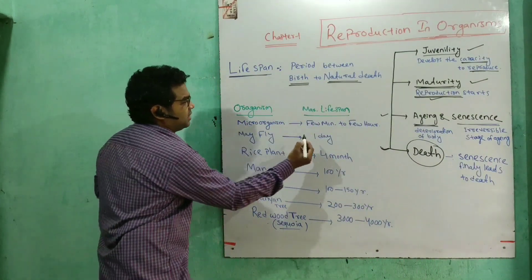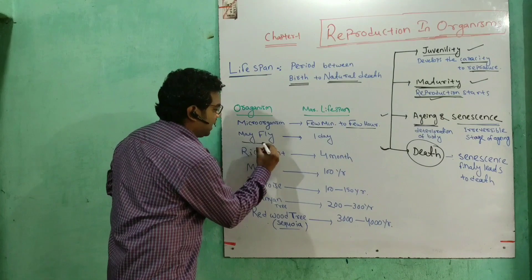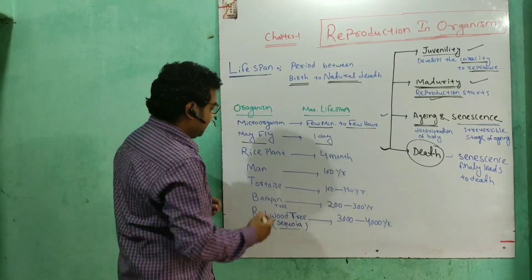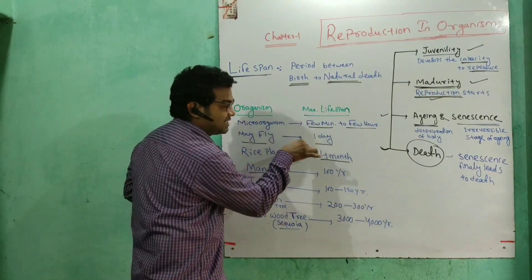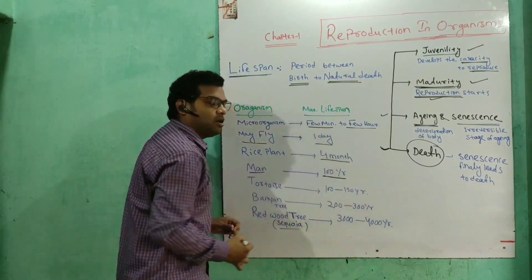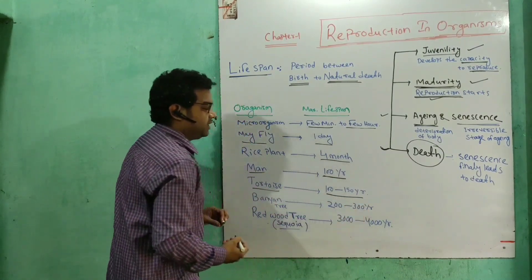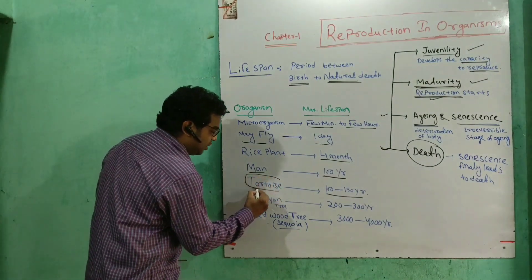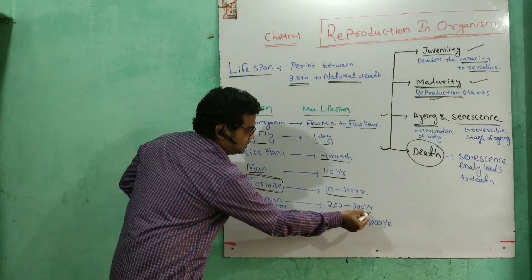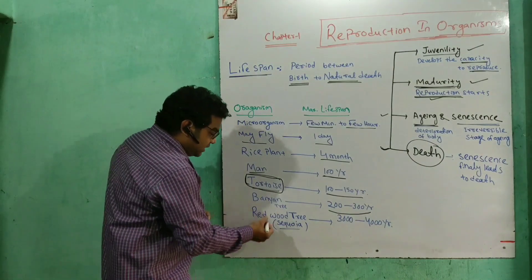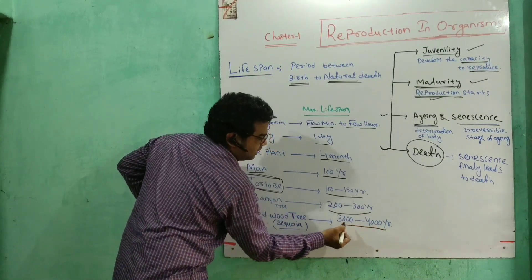For example, bacteria have a maximum lifespan of a few minutes to a few hours. The mayfly insect has a very short lifespan. The rice plant has a lifespan of about four months. Humans have a lifespan of 80 to 100 years, and some organisms like tortoises can live 100 to 150 years.